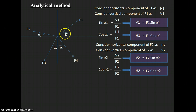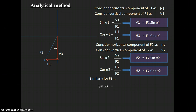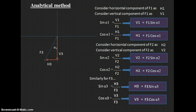For F3, we similarly find the horizontal component H3 and vertical component V3 by constructing a right-angle triangle — shifting H3 to the bottom. Applying sin(α₃) = opposite/hypotenuse = H3/F3, so H3 = F3·sin(α₃). And cos(α₃) = adjacent/hypotenuse = V3/F3, so V3 = F3·cos(α₃).